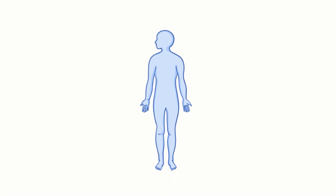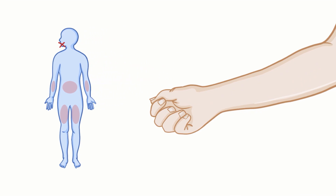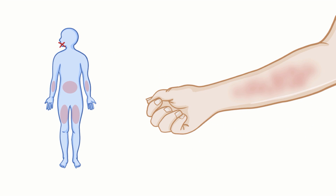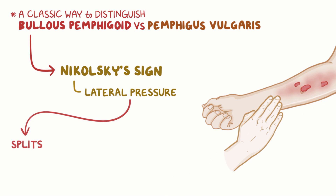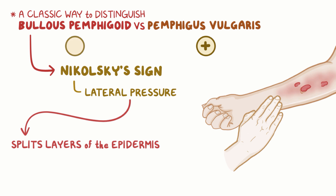Bullous pemphigoid is most commonly located on the lower abdomen, flexor side of the forearms, and anterior or inner thighs, but can also involve other areas as well. Unlike pemphigus vulgaris, it doesn't typically involve the oral mucosa. Early on there's a red and itchy rash, and over time it develops into large bullae or blisters. The blisters typically evolve over a few days and leave behind crusted lesions that heal without scarring. A classic distinguishing feature is the Nikolsky sign, which is when lateral pressure is applied to a lesion causing a split between the upper and lower layers of the epidermis — in bullous pemphigoid, the skin doesn't split, unlike pemphigus vulgaris which will be Nikolsky sign positive.